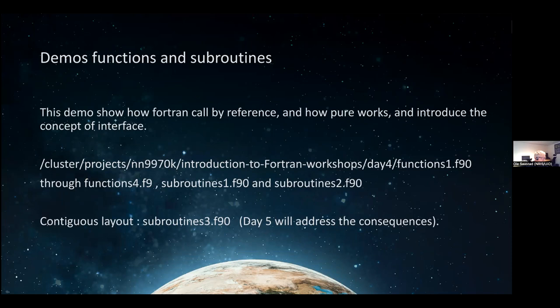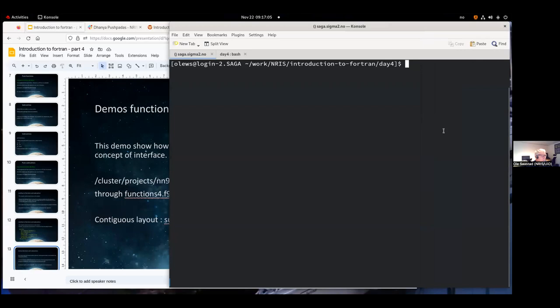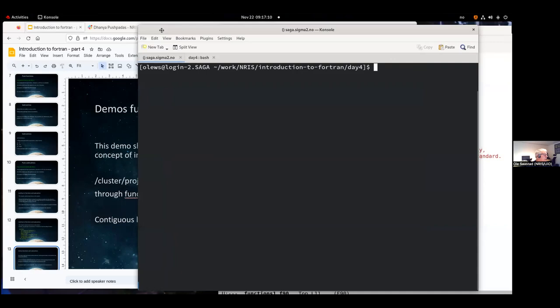Moving to the examples - I assume you have downloaded them and can play with them later. We now go through subroutines one through four. I'll cover number three, which is about contiguous layout, where all elements are back to back with no gaps in the array - no blank fields between elements - which is very important for performance. You can force the layout to be contiguous in memory. I hope you can see my terminal and Emacs window - fonts are okay?